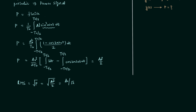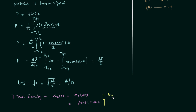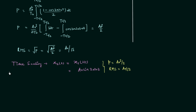Now we will perform time scaling. After time scaling we have signal x2t = x1(2t) = a0·sin(2ω0t). Performing the same steps, the average power is again a0²/2 and the RMS value is a0/√2. We can see that time scaling has no effect on the average power.